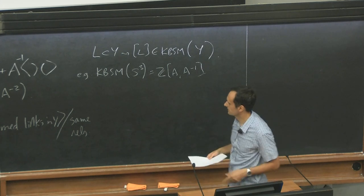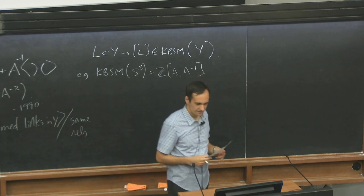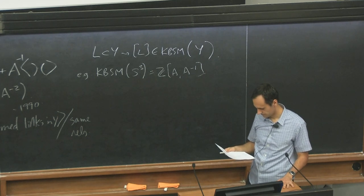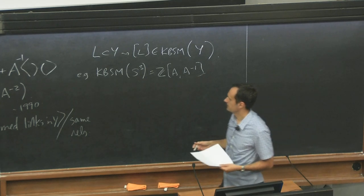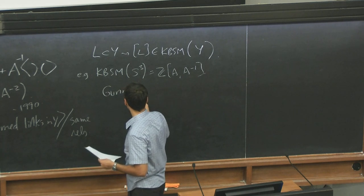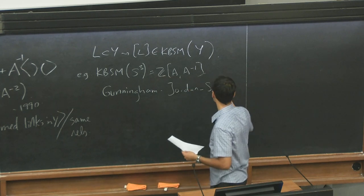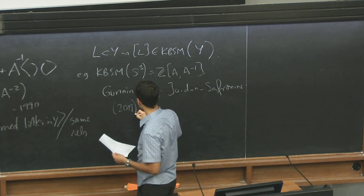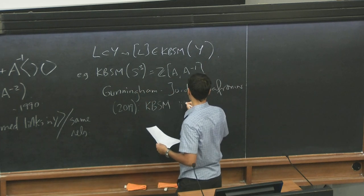So for, well, this started like around 1990. And for the last 30 years, this was kind of going under the radar and people were computing it for various things, lens spaces and so on. But it turns out to have an interesting interpretation. So recently, Gunningham, Jordan and Safronov, in 2019,